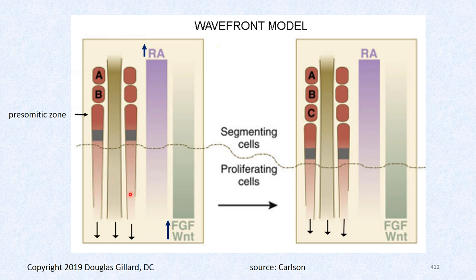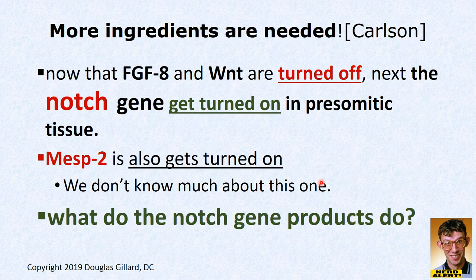Here's the wavefront model illustrated: the already-formed somites are secreting retinoic acid up here — a lot of retinoic acid in the interstitium. Down in the presomitic zone FGF8 and WNT rule with high levels in the environment. Right at the boundary, the cells adjacent to the last formed somite are absorbing retinoic acid and are therefore able to turn into the next somite. That's the wavefront — the wave of retinoic acid sweeping toward the caudal region.